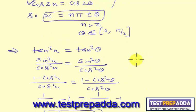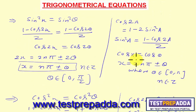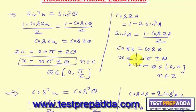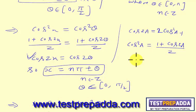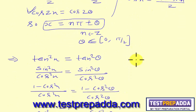To summarize: sin²x = sin²θ has solution x = nπ ± θ; cos²x = cos²θ has the same solution; and tan²x = tan²θ also has the same solution x = nπ ± θ.